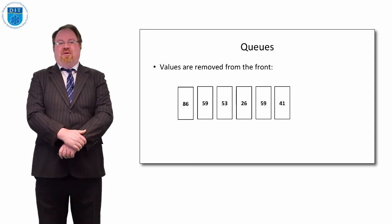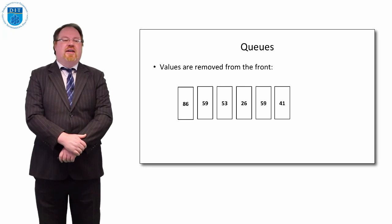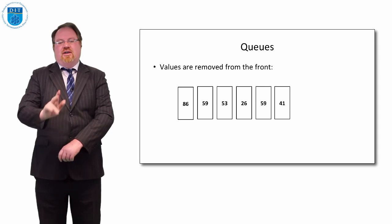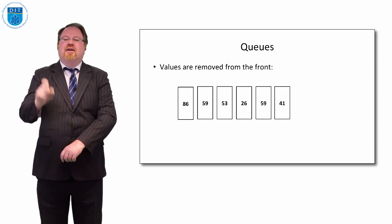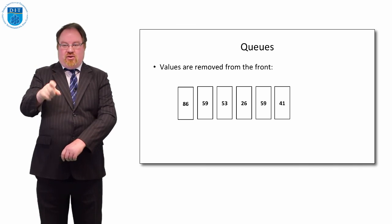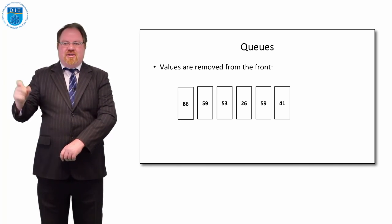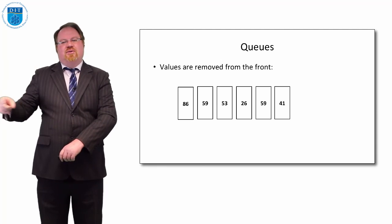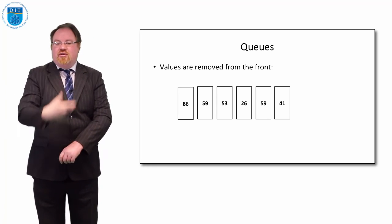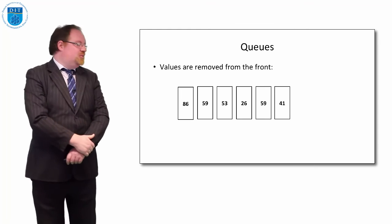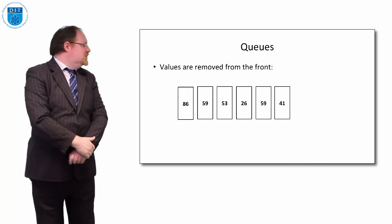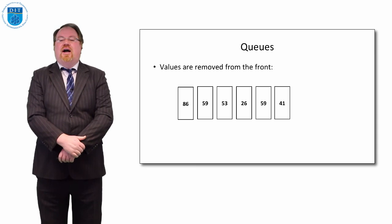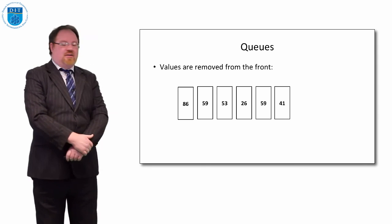Think about a printer queue: if three of us are in a room and we all print a document at the same time, whoever clicks print first goes to the printer queue first and gets printed first. Whoever clicks second gets done second, whoever clicks third gets done third. The order in which you join the queue is the order in which you're served — first come first served, or first in first out.